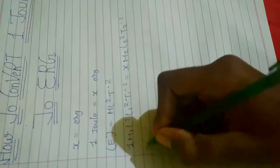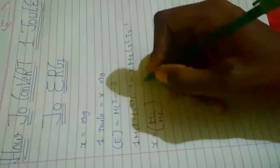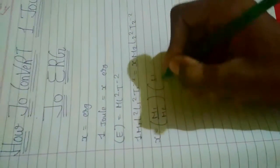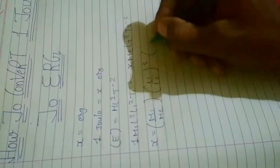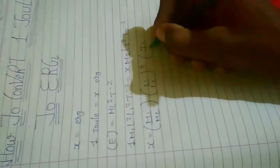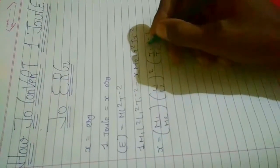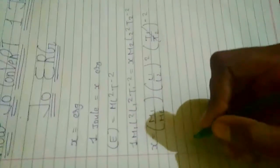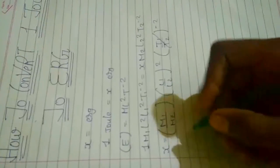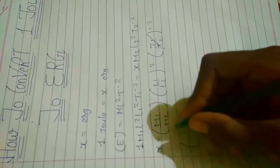So by solving this equation we get x equals m₁ upon m₂, l₁ upon l₂ whole squared, t₁ upon t₂ to the minus 2. So this will be cancelled. So here we get it's in mass.